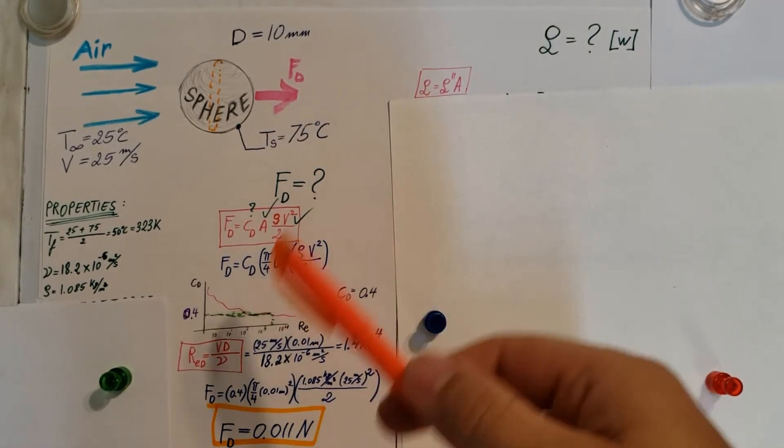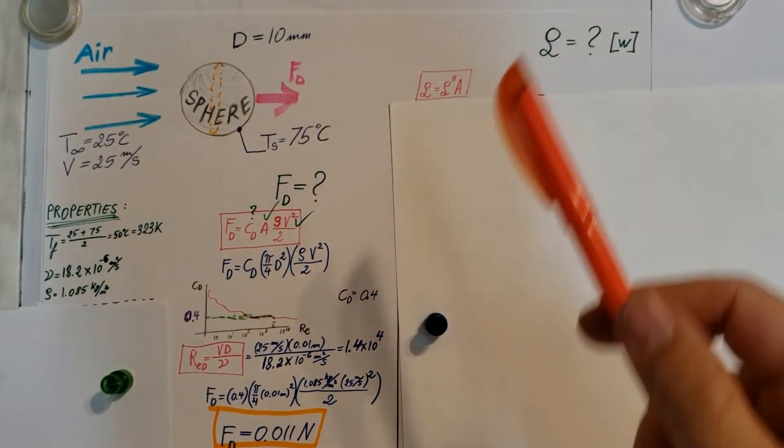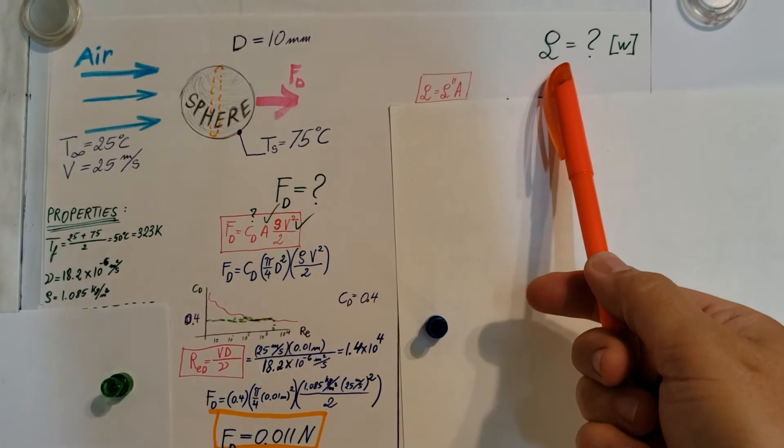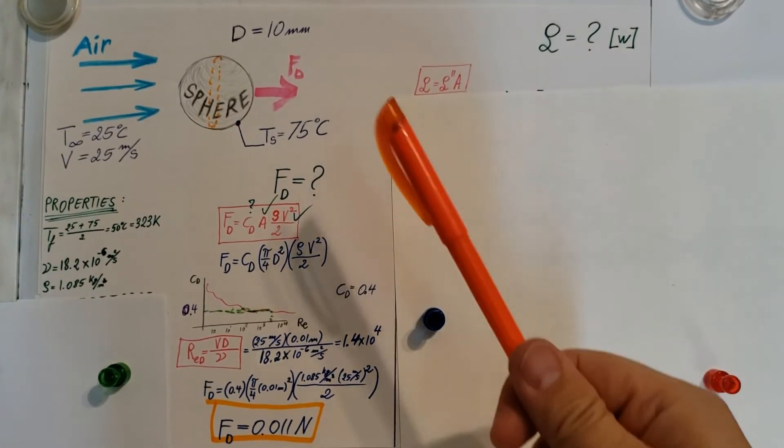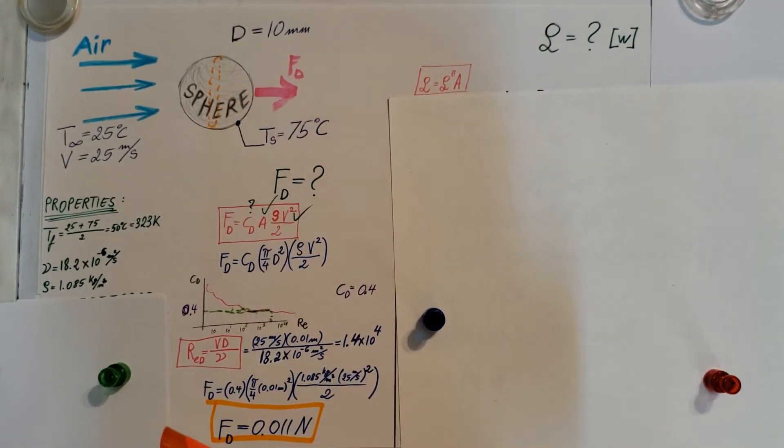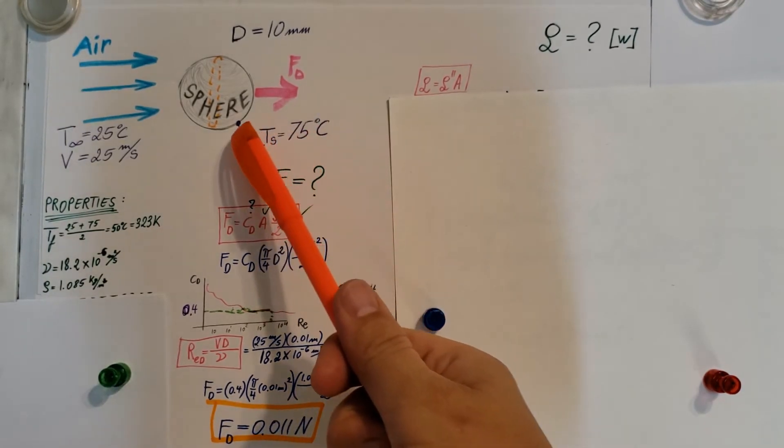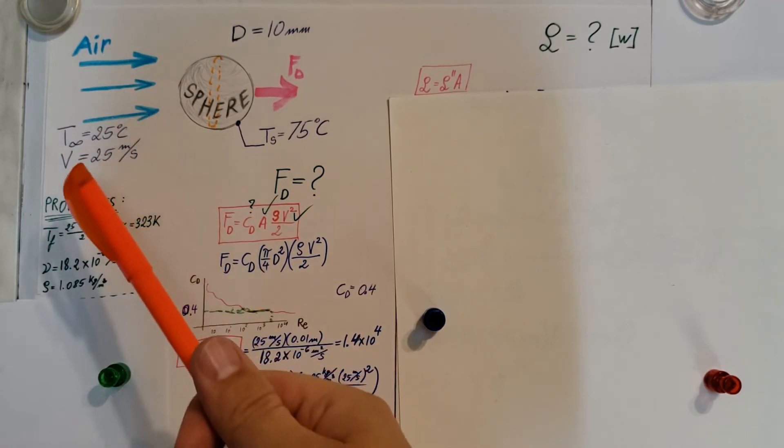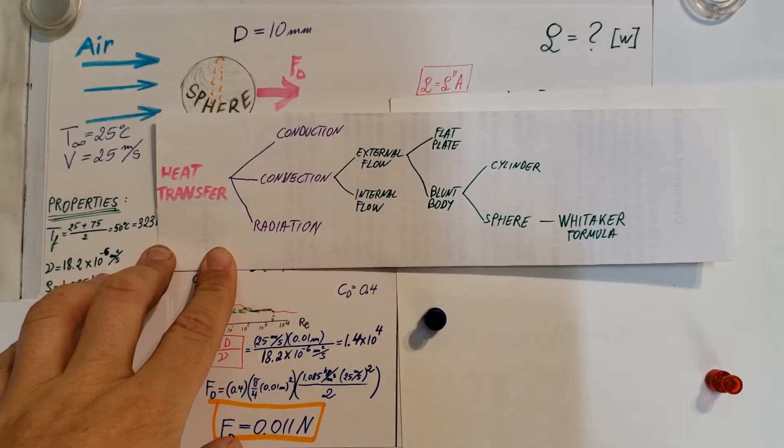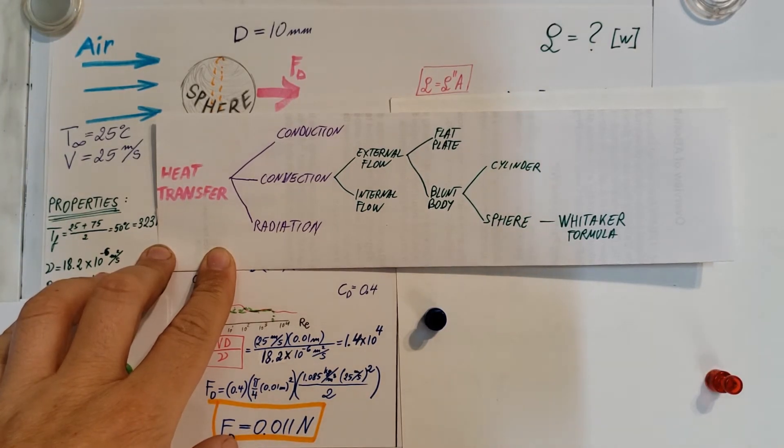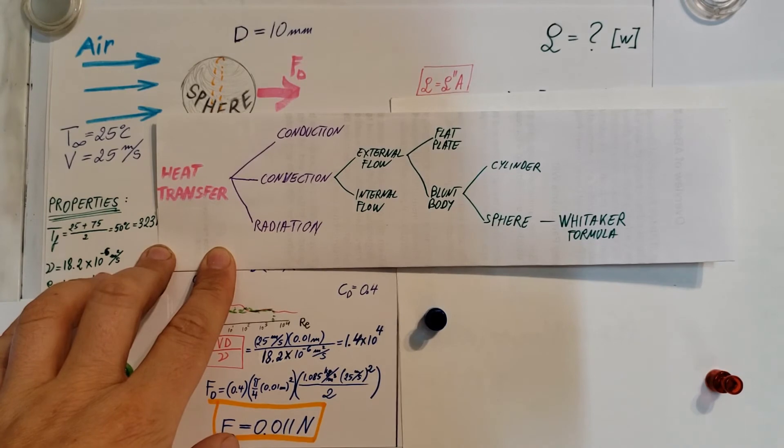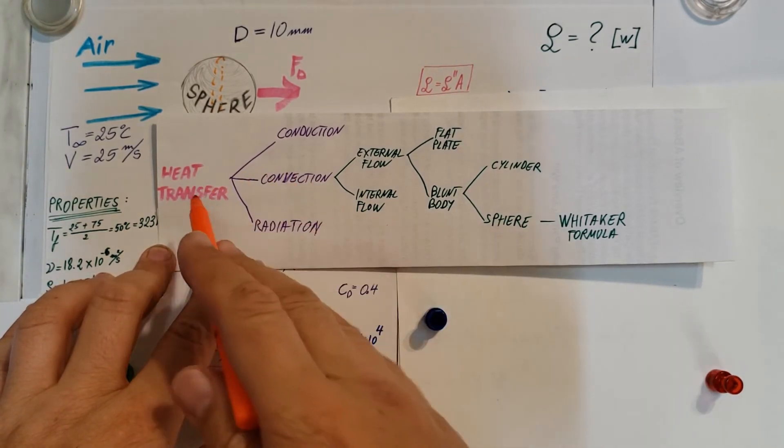Alright, this was the fluid mechanics part of the problem. Now let's come back to heat transfer. They want us to find the heat transfer rate from the sphere to its environment from 75 degrees Celsius at the surface of the sphere and then we have the air at 25. Right off the bat we should start thinking, what kind of problem are we dealing with here? Because we're going to have to find a formula.